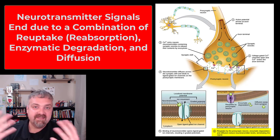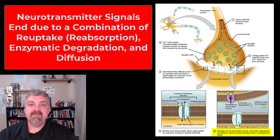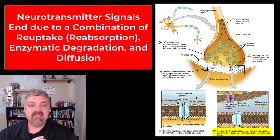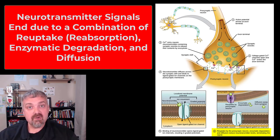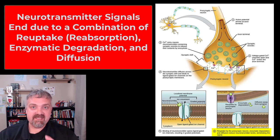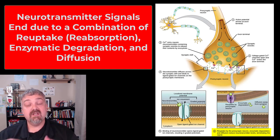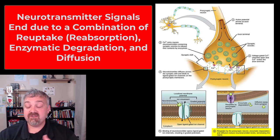One important example of reuptake: drugs like Prozac are classified as SSRIs — selective serotonin reuptake inhibitors. That drug doesn't increase the amount of serotonin being produced; it slows its reabsorption. So there is more serotonin in the synapses affecting postsynaptic cells because reuptake has been slowed. Reuptake and enzymatic degradation are therefore very important mechanisms.